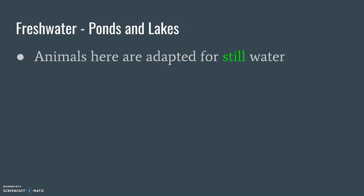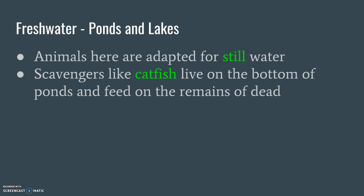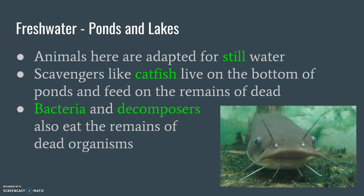Animals here have to be adapted for still water — not any animal can live in a lake because there's nowhere to run and escape, and no new animals coming in. A lot of times scavengers like catfish live on the bottom of ponds and feed on remains of the dead. Bacteria and other decomposers still play a part here — this is an ecosystem just like anything else. There's still a food chain: bacteria, then maybe krill or crab, then a fish, then a catfish.